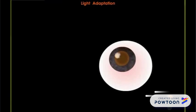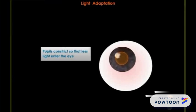Light adaptation: A person is temporarily blinded if suddenly exposed to light on leaving a dark room. The eyes gradually adapt to the light. This is called light adaptation. During light adaptation, the pupil constricts and the eyelid closes partially to allow less light to enter the eyes.